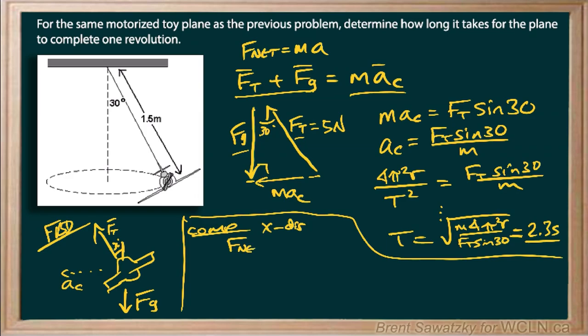F net equals MAC. And in the horizontal direction, it would be the F net is simply FT sine 30 equals M, and then AC could be replaced with the 4 pi squared R over T squared.